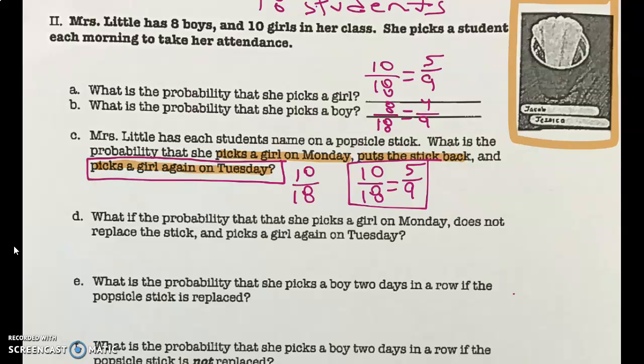Letter D: What is the probability that she picks a girl on Monday, does not replace the stick, and picks a girl again on Tuesday? Monday is already 10 out of 18. She pulls that stick out and picks a girl — how many girls are left? There's only nine left. How many sticks are left? There's one less, so it's nine out of 17.